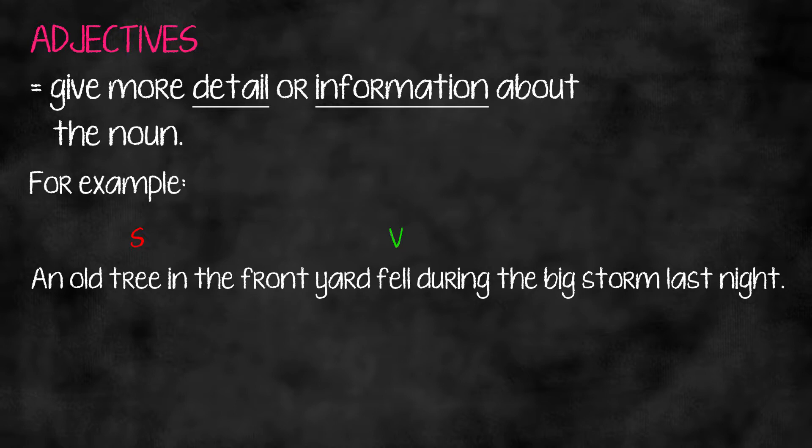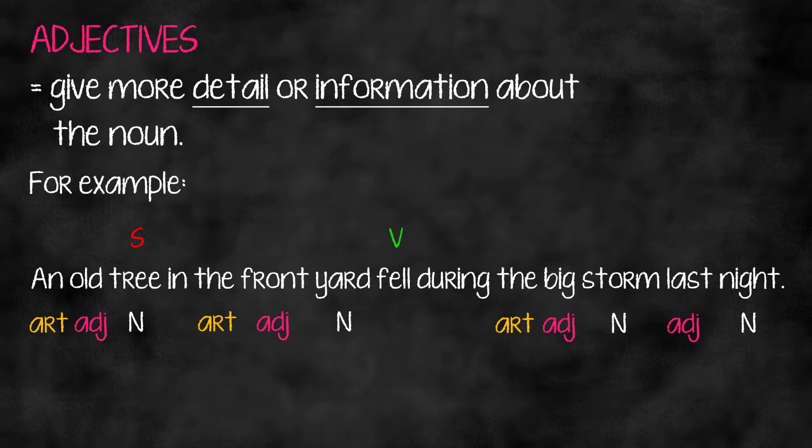We have nouns all over the place, so let's look at modifiers of these nouns. For 'tree,' we give information that it's 'an old tree.' 'Old' is an adjective because it's not 'a' or 'the.' 'An' is an article. For 'yard,' which is a noun, we have modifiers: it is 'front yard' — 'front' is an adjective, and 'the' is an article. Remember, only 'the' or 'a' are the only articles.